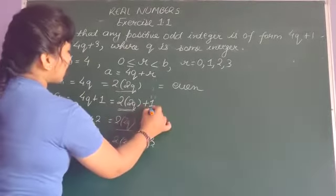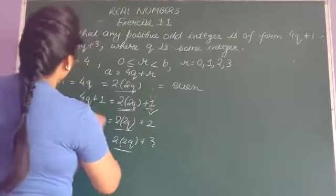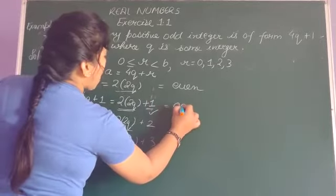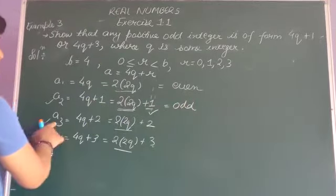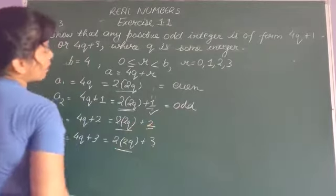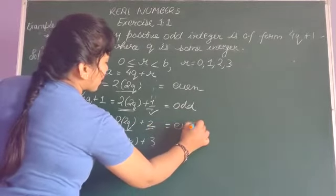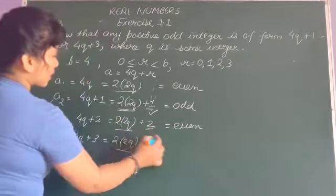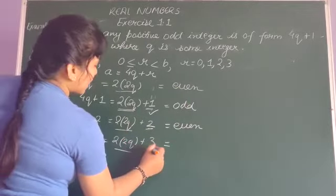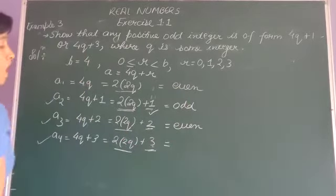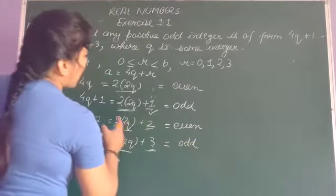आप देखिए, A2 में जो second term है वो odd है। तो A2 कैसा integer हो गया? Odd। ऐसे ही A3 में देखिए, जो second term है वो even है, तो यह number क्या हो गया? Even। अब जो A4 है, इसमें जो second term है वो odd है, तो यह क्या हो गया? Odd integer हो गया।